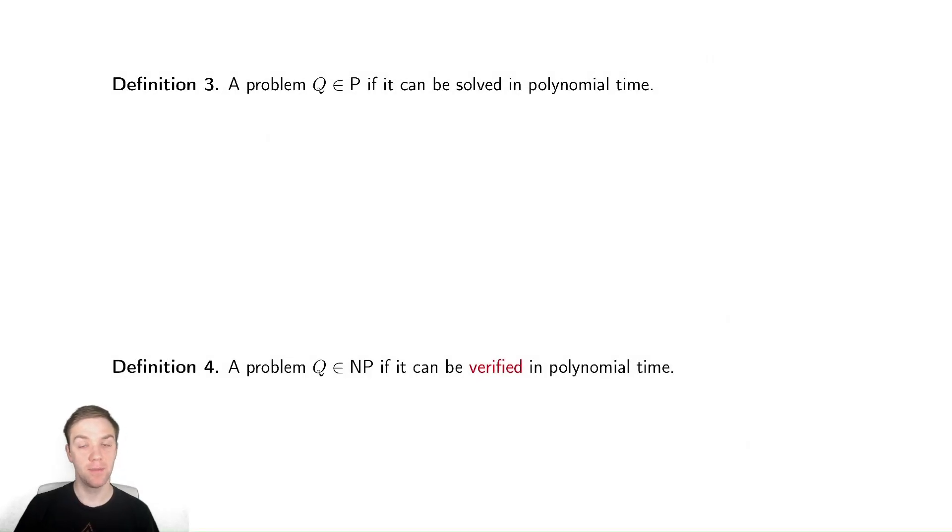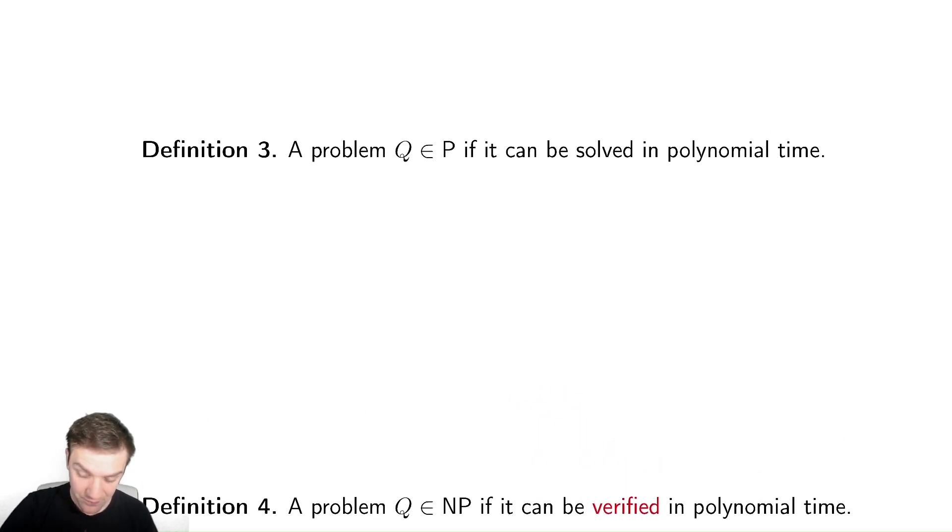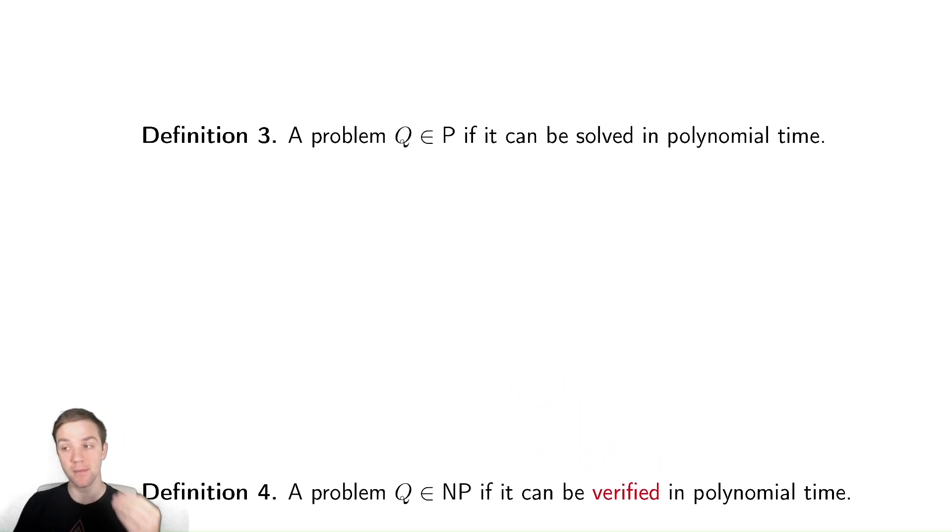We're going to begin discussing what people call complexity classes. These are classes of problems and their difficulty. So the first of these is what we call P. This is a problem is in P if it can be solved in polynomial time.